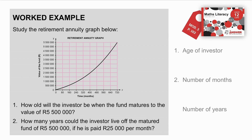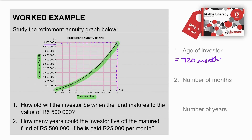Let's look at the worked example. Study the retirement annuity graph. As time progresses, the value of the fund steadily increases — it's a curved, increasing graph. Question 1: How old will the investor be when the fund matures to the value of R5,500,000? Reading across to the graph at R5,500,000 and down to the x-axis gives us 720 months. To calculate the age: 720 months ÷ 12 months per year = 60 years. So this retirement annuity pays out when the person is 60 years old.